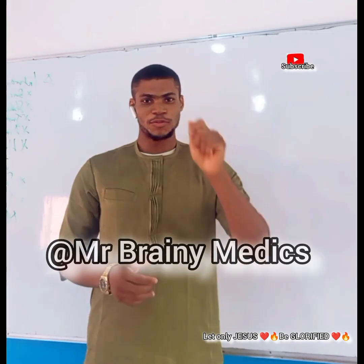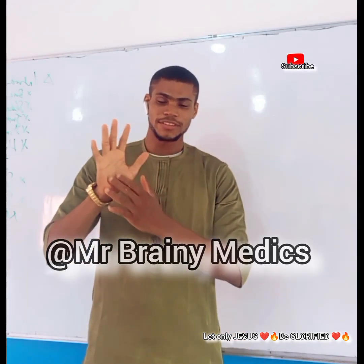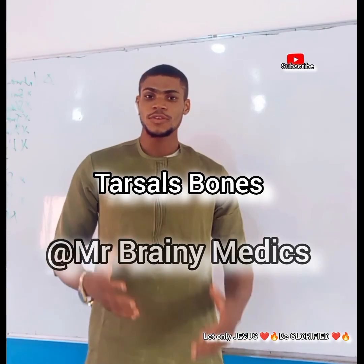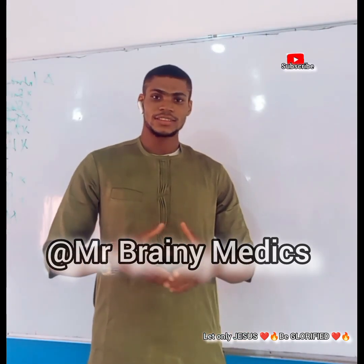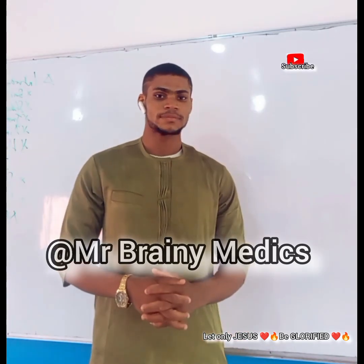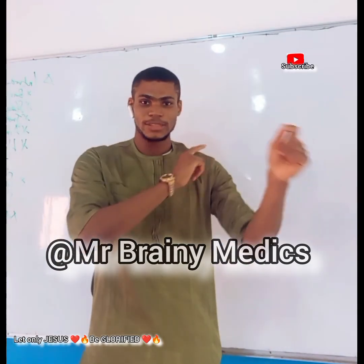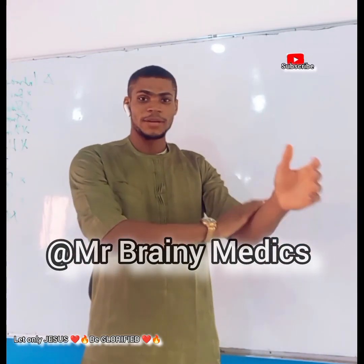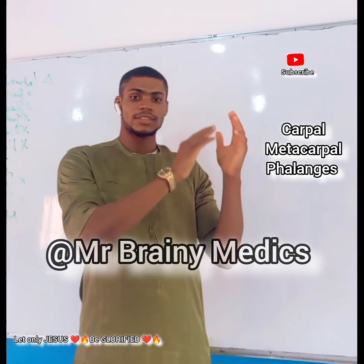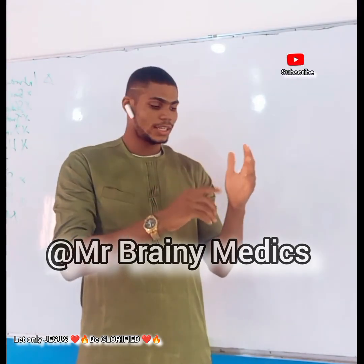Good morning everyone, welcome back. By the grace of God, last time I explained the carpal bones of the hand. Today I'm going to be explaining the tarsal bones of the neck. You should know that the hands are called the upper limbs while the legs are called the lower limbs. There are three groups of bones in the hand — this is the arm, this is the forearm, and this is the hand. The three groups are the carpal bones, the metacarpals, and the phalanges.